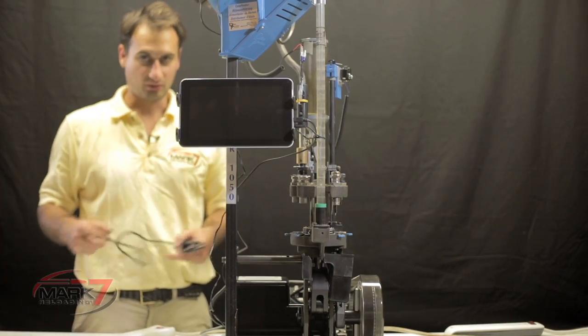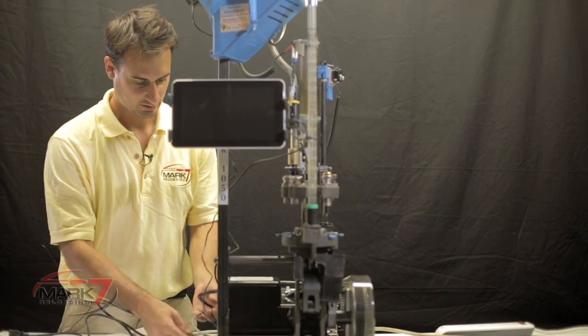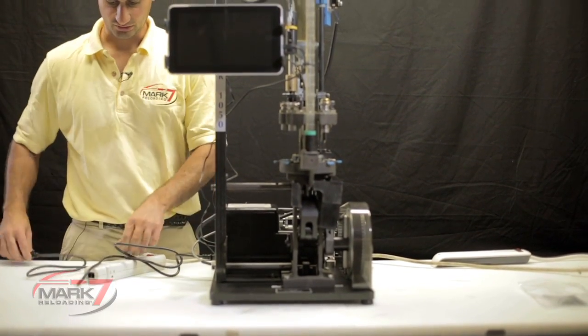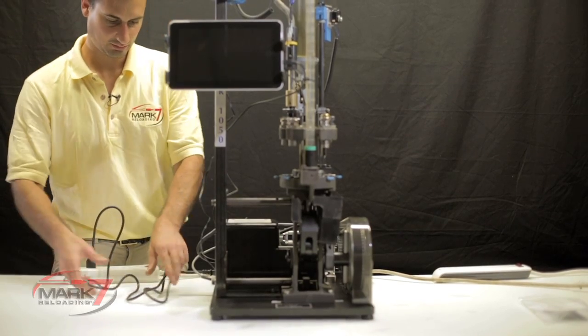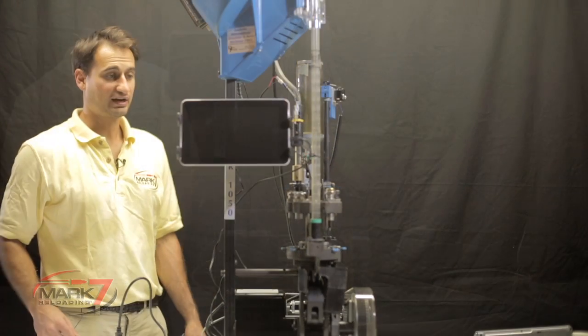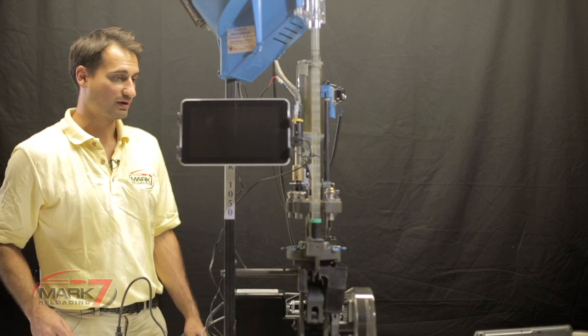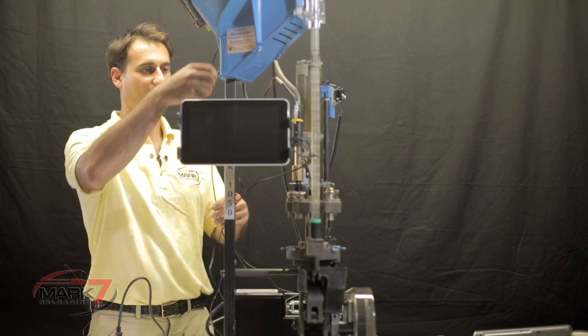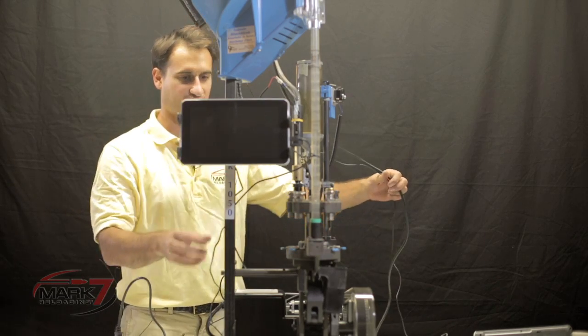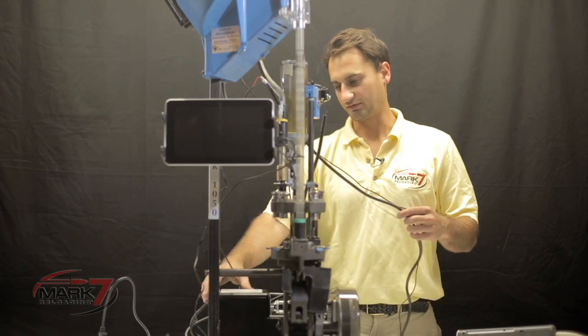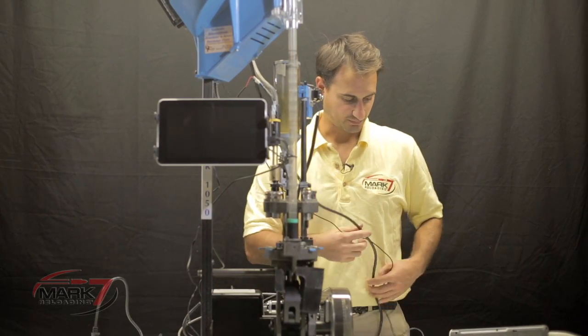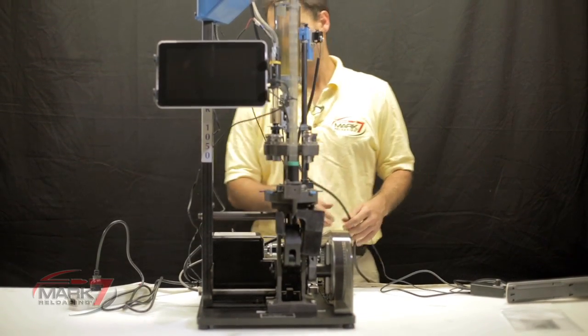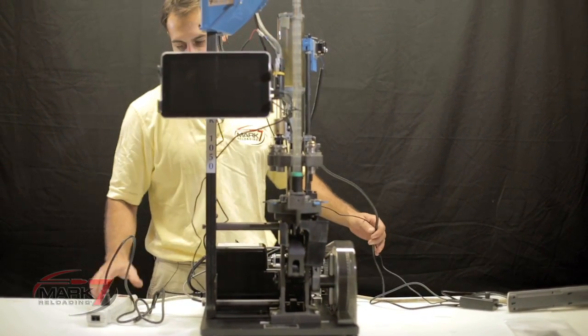When you're ready to power on the Mark 7, make sure the switch is in the off position. Ensure the power is secure. When you're setting up the final wiring for the unit, it's important to keep the Dillon case feeder cable and the Mr. Bullet feeder cable away from the cabling from our tablet and console. And it's best to power these accessories on a separate power strip from the Mark 7 Auto Drive.